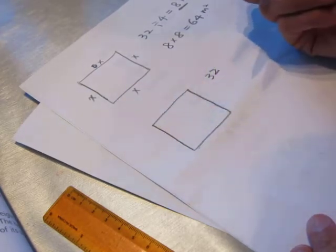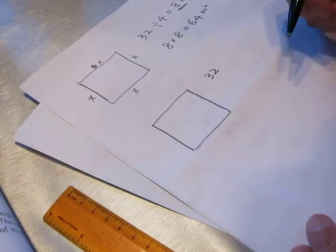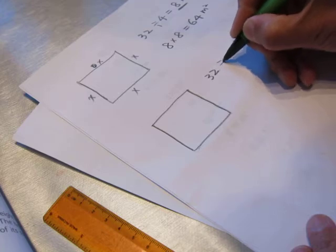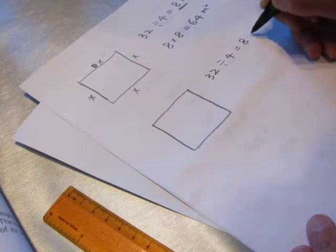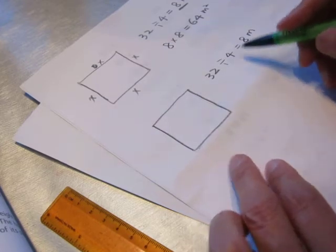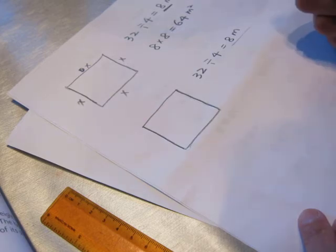Each side is 8 meters. We know each side equals 8 meters, then we calculate its area.